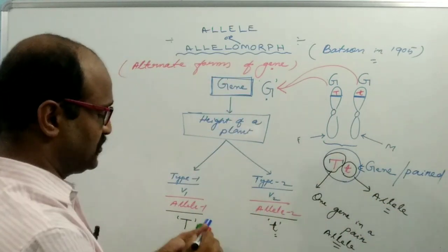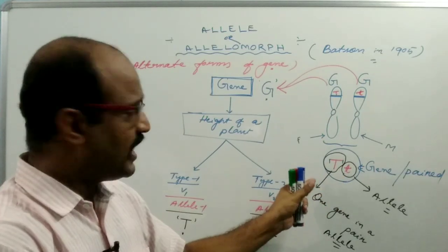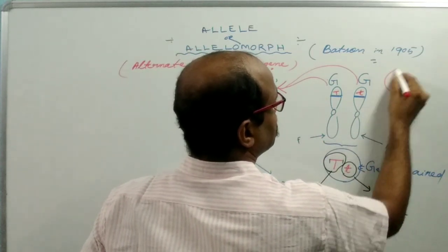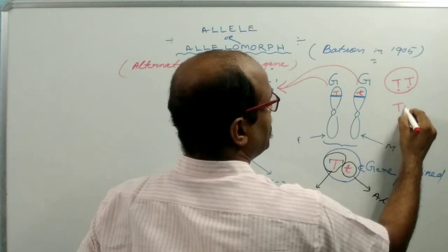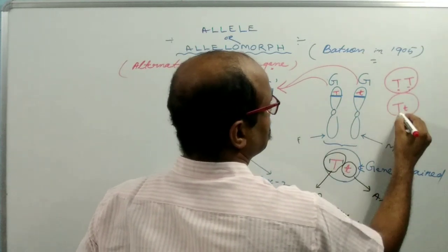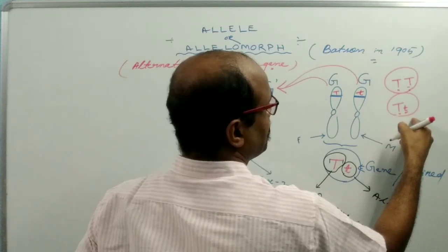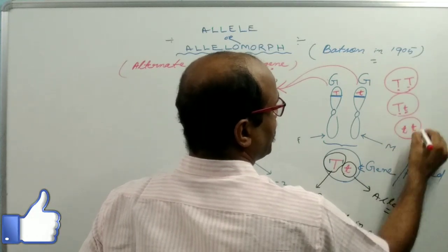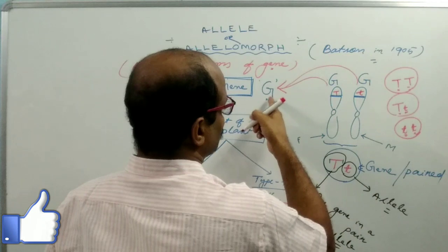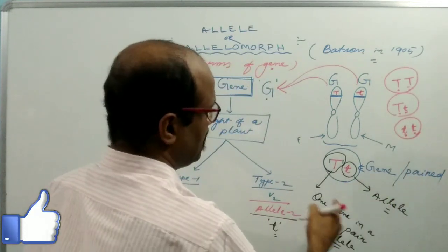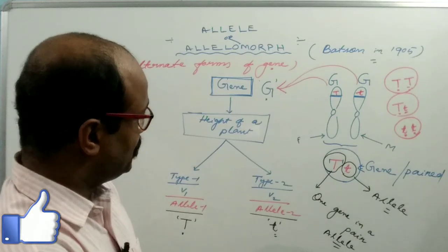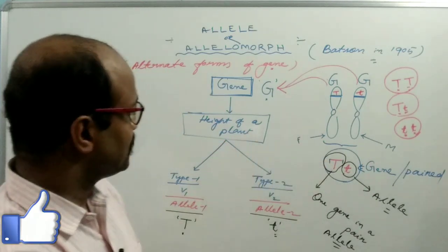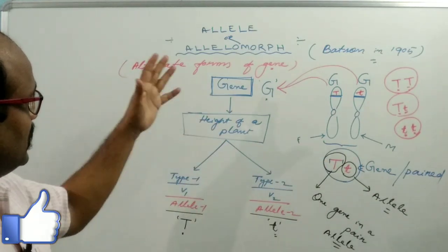So the gene pair contains two Alleles of different versions. If capital T and capital T are both present, the two Alleles are the same version. If capital T and small t are present, the gene is the same — capital G — but the versions are different: one is capital T and the other is small t. This is the complete idea about Alleles.